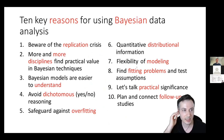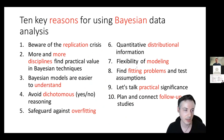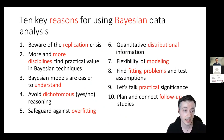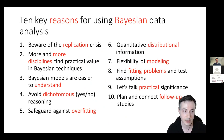So those were the 10 reasons for using Bayesian data analysis: beware of the replication crisis; more and more disciplines find practical value in Bayesian techniques; Bayesian models are typically easier to understand; they help us avoid dichotomous reasoning; they provide tools to reduce the risk of overfitting; they provide quantitative distributional information instead of point estimates; they give us modeling flexibility; they help us find fitting problems and when assumptions break down; they support practical significance; and they can be useful in planning follow-up studies.